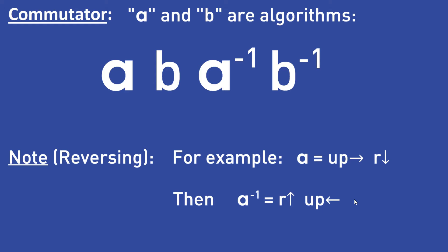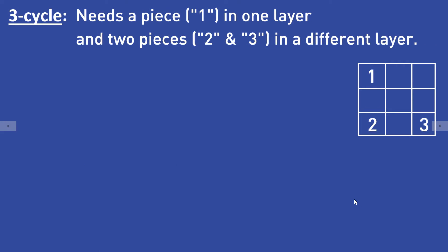There are some conditions for performing a 3-cycle. One piece has to be in one layer and two other pieces in a different layer. I will call the first piece 'piece 1' and the two other pieces that have to be in the same layer 'piece 2' and 'piece 3.'